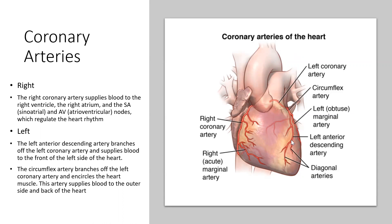The blood within the heart does not supply the heart muscle. It's not until it comes outside the heart that it branches into the right coronary artery and the left coronary artery. The right coronary artery supplies blood to the right ventricle, the right atrium, the SA node, and the AV node. The left coronary artery descends and supplies blood to the front of the left side of the heart. The circumflex artery branches off the left coronary artery and encircles the heart muscle, supplying blood to the outer side and back of the heart.